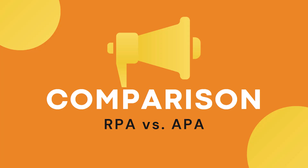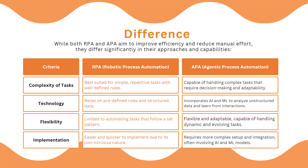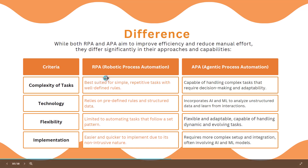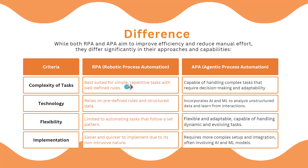Now coming to the comparison between RPA and APA based on certain criteria. In terms of task complexity, RPA is best suited for simple, repetitive tasks with well-defined rules, whereas APA is capable of handling complex tasks that require decision making and adaptability. For the technology criteria, RPA relies on predefined rules and structured data, whereas APA incorporates AI and ML to analyze unstructured data and learn from interactions.